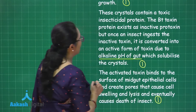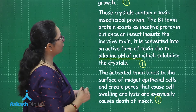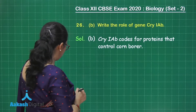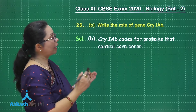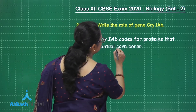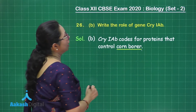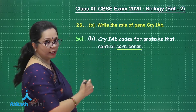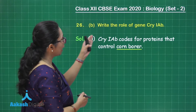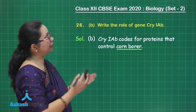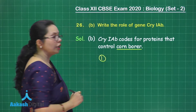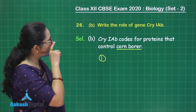For part B, the role of the gene cry 1AB: this gene codes for proteins that control the corn borer, which is an insect pest that infects corn (maize) and damages the crop. So cry 1AB protects plants from corn borer. This is worth one mark.